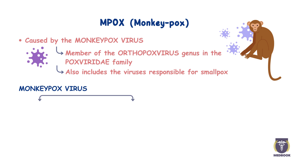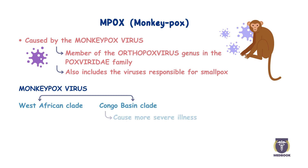There are two main clades of the monkeypox virus: the West African clade and the Congo Basin clade. The Congo Basin clade is known to cause more severe illness and is considered more contagious compared to the West African clade.